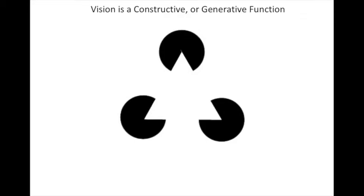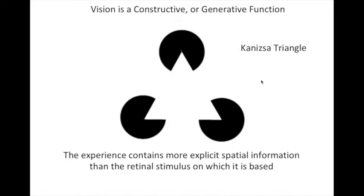Vision is a constructive or generative function, as seen here with the Kanizsa triangle, where we see a foreground triangle that's apparently occluding three background circles. We actually see an actual brightness edge across this boundary, where the white triangle appears a brighter white than the surrounding background. The experience of the Kanizsa triangle contains more explicit spatial information than the retinal stimulus on which it is based. This is the perceptual principle of reification—the construction of a richer, more complete representation based on an impoverished sensory input.